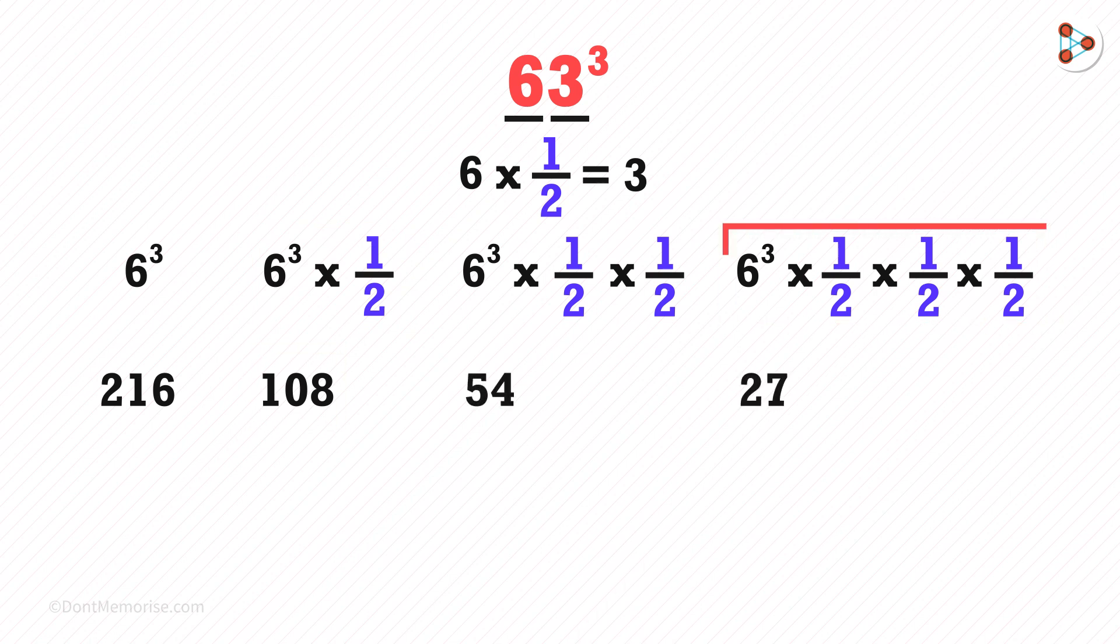And then we get 27. The middle two parts have to be multiplied by 2 always. 108 multiplied by 2 gives us 216, and 54 multiplied by 2 gives us 108.